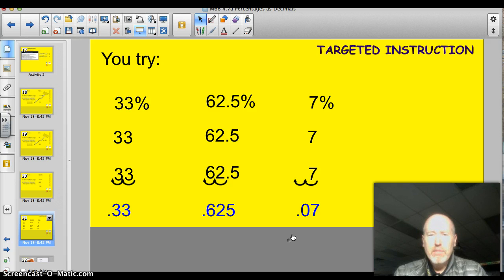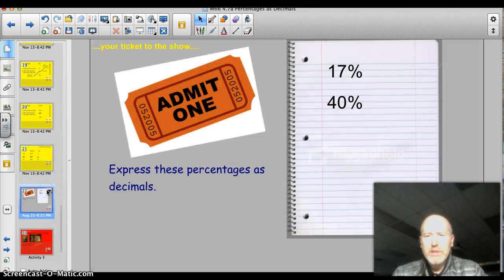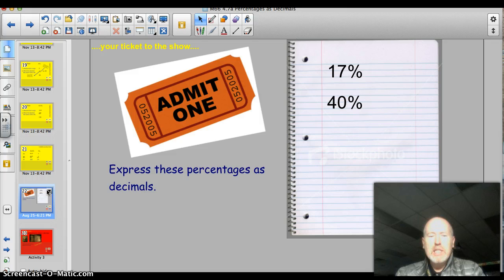And there are your answers. .33, .625, .07. You are ready for the ticket to the show. Alright, here it is. Express these percentages as decimals. 70% and 40%.